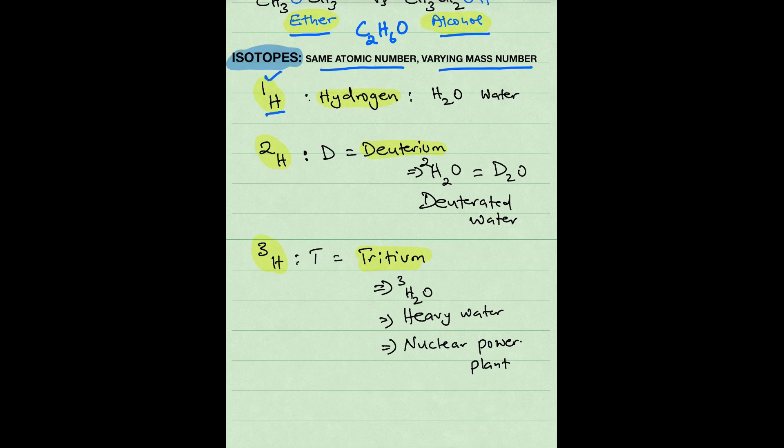hydrogen with a mass of 1 has an atomic number of 1. So the atomic number there is 1 and the mass number is 1. That means it has 1 proton and 0 neutron.